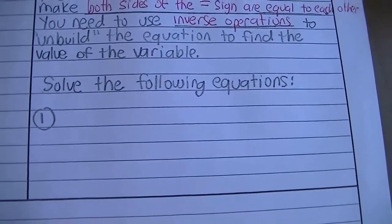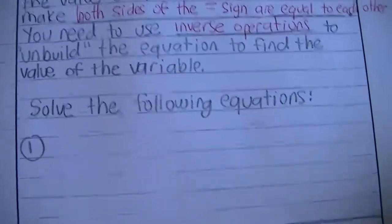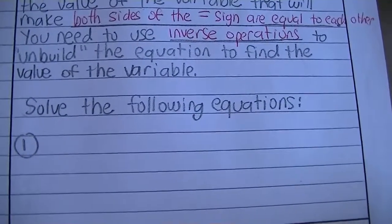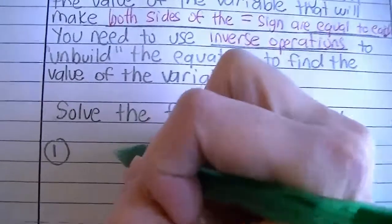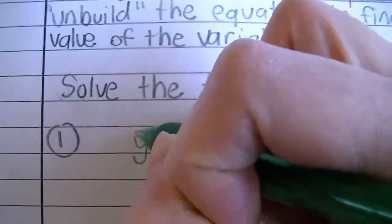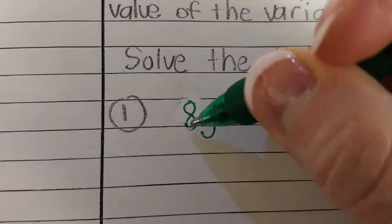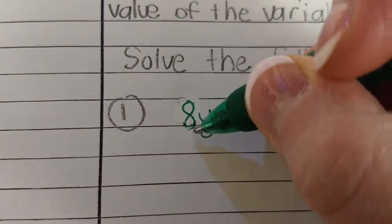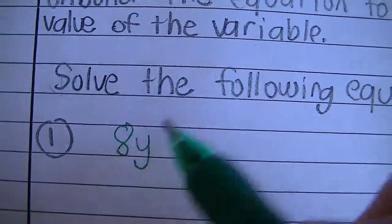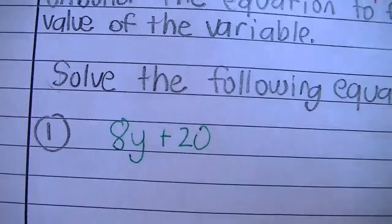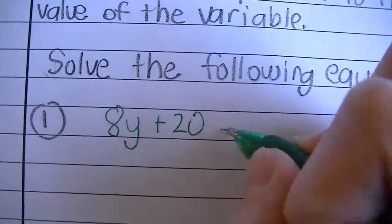It says solve the following equations, and it's blank. The reason it's blank is because I want you to see how I build it, because that will help you build it yourself and then eventually un-build it. So as I'm building this equation, I'm going to start with the variable of y. Then I'm going to multiply it by 8 — I know I'm multiplying by 8 because the y has that coefficient of 8 right in front of it. When they're smushed together like that, that means multiply — it means 8 times y. And then I'm going to add 20. So 8 times y plus 20 is going to equal 44.